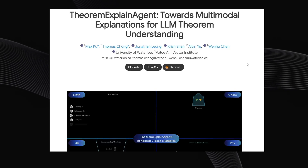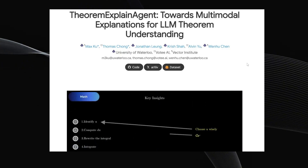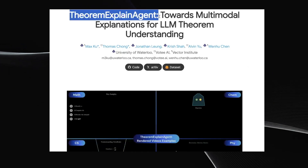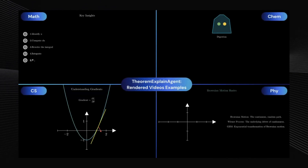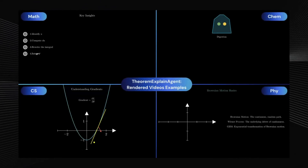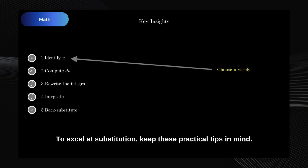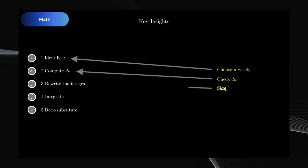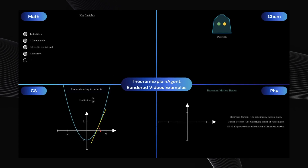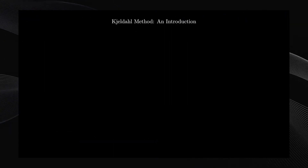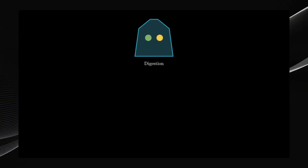Next up, we have something truly revolutionary for education: Theorem Explain Agent. This is probably the most useful AI in this entire video. It generates videos that explain complex math and science concepts. And it doesn't just create an animation — it also generates a voiceover to explain the entire concept. Let's check out some examples. First, a chemistry example explaining the Kjeldahl method.